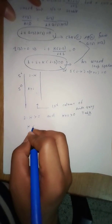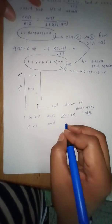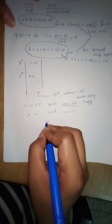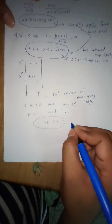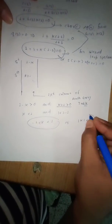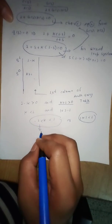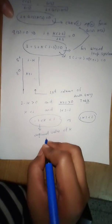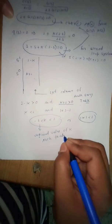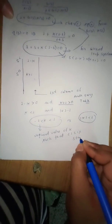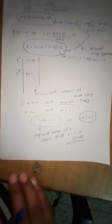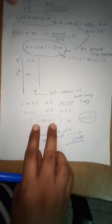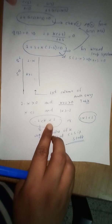From 1 - k > 0, we get k less than 1. And from the second element (k + 1) > 0, we get k greater than minus 1. Combining both conditions: minus 1 less than k less than 1, or equivalently |k| < 1. This is the required range of k such that the closed loop system is stable. In this case, the system is conditionally stable because it is stable only for this specific range of k.